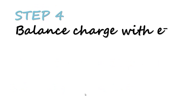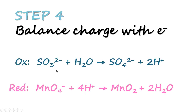Step 4 — we balance the charges with electrons. For the oxidation equation, we have a -2 charge on the left hand side and 0 on the right, so we add 2 electrons on the right hand side, giving -2 on both sides. For the reduction equation, the overall charge is -1 + 4 = +3 on the left hand side and 0 on the right, so we balance by adding 3 electrons on the left hand side.